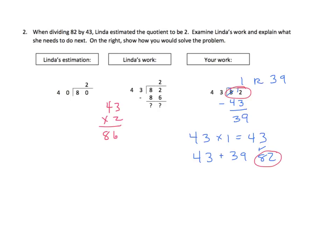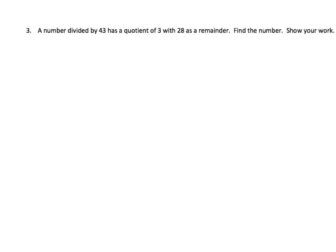Continuing with some word problems, it says a number divided by 43 has a quotient of 3 and the remainder of 28. It's not a bad idea to just kind of set the problem up here. So we don't know what the number is, so we'll put a question mark there. We have a 43 for our divisor, and we have a quotient of 3 with a remainder of 28.